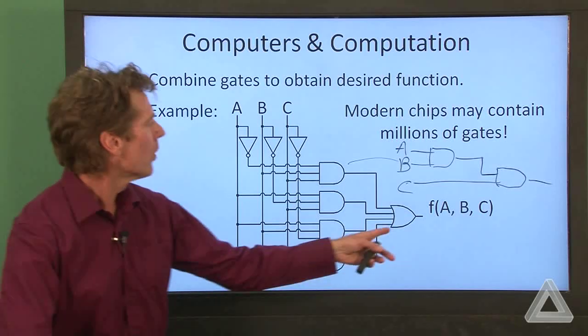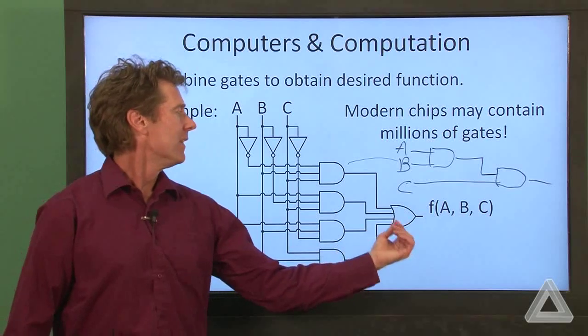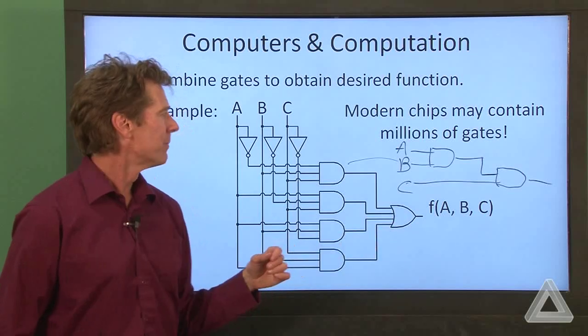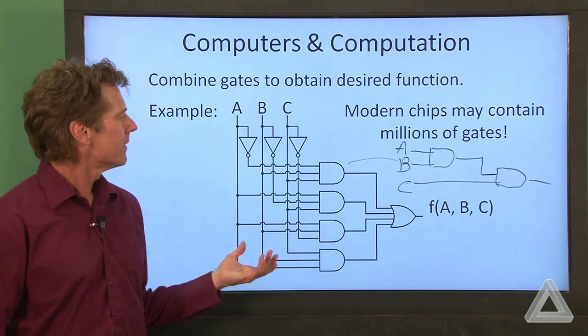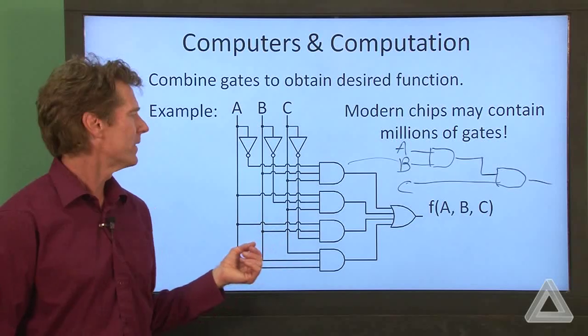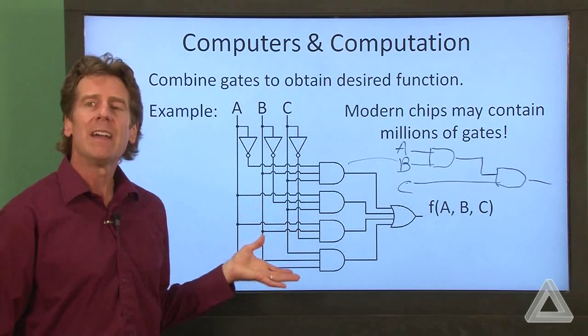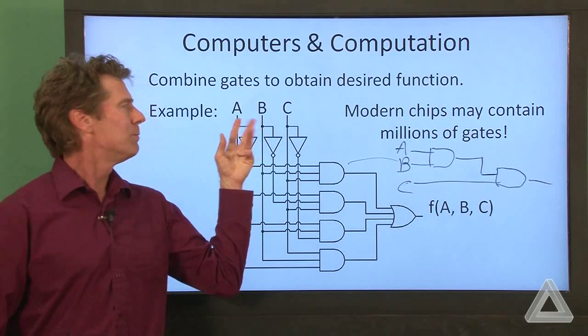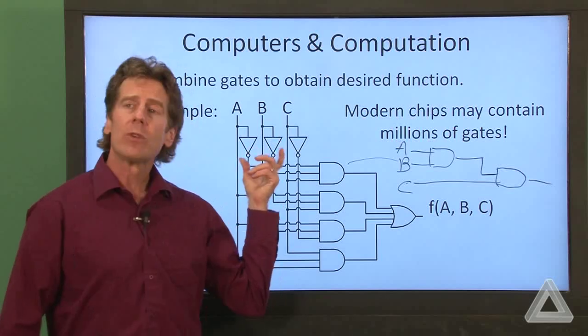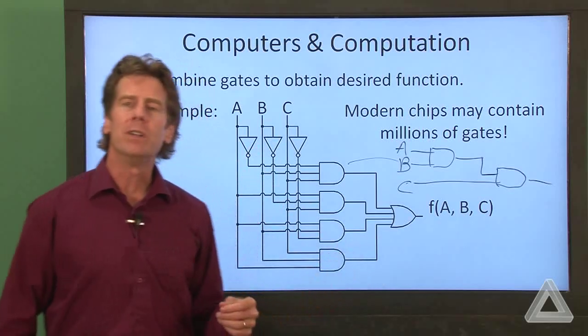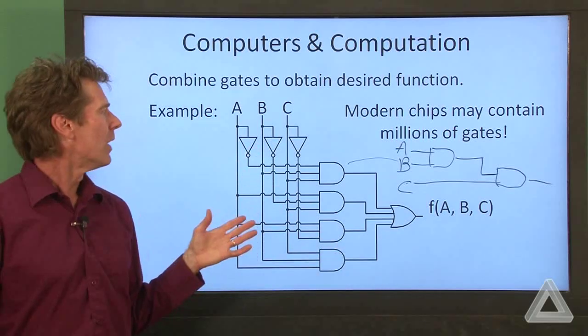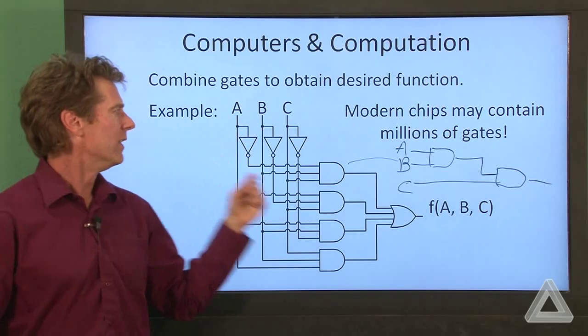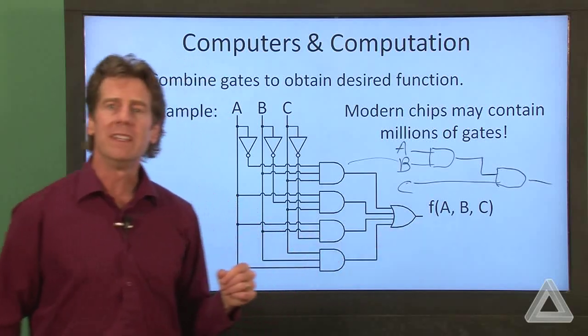And this four-input OR gate is realized with three two-input OR gates. Now, if you think about this function long enough, stare at this, you might be able to figure out that this is actually a voting function of sorts. If two of these bits are 1, or all three are 1, then this output will be a 1. Otherwise, if either 0 or 1 of these inputs is 1, then the output will be 0.